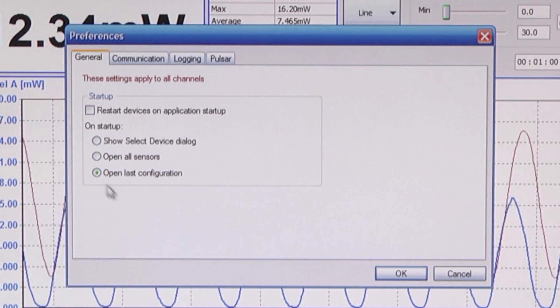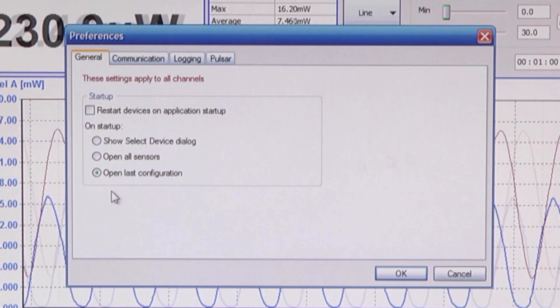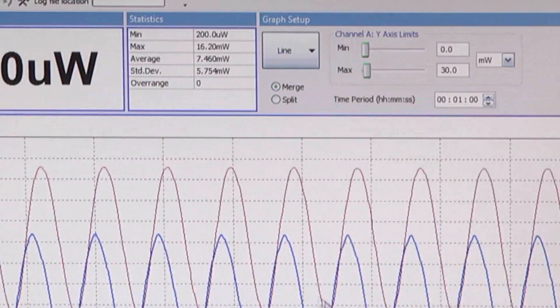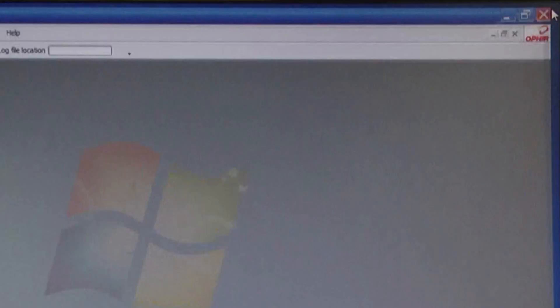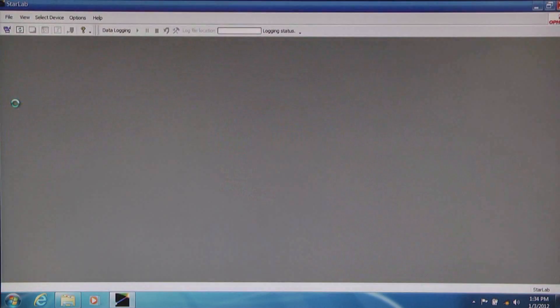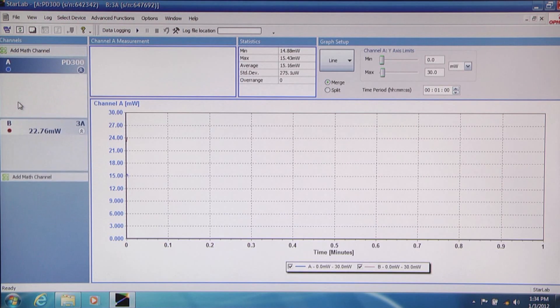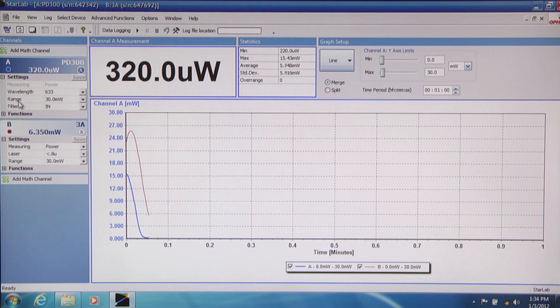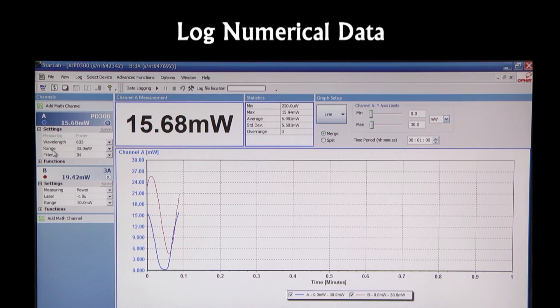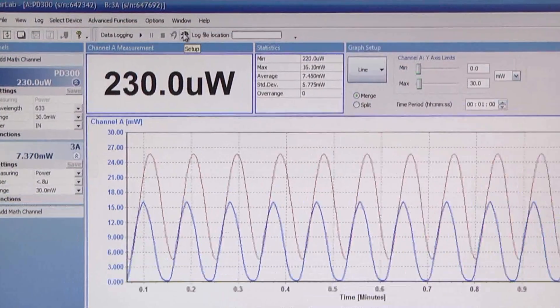Before we close down the program here, we close the program, open it again, and get back to the same configuration. Now let's see how to log numerical data. Let's click on the log setup icon to open the log settings window.